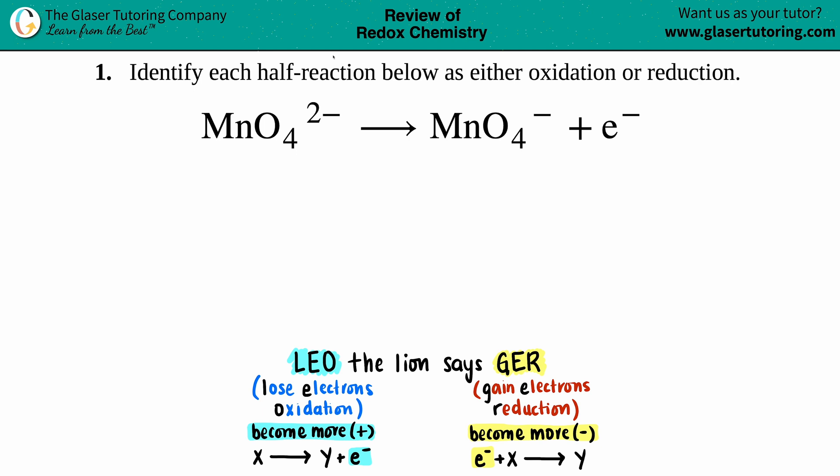Number one: identify each half-reaction below as either oxidation or reduction. Okay, so they gave us the balanced equation: MnO₄²⁻ yields MnO₄⁻ plus one electron, e⁻. e⁻ just means an electron. Now whenever you're talking about oxidation or reduction or any redox reaction...